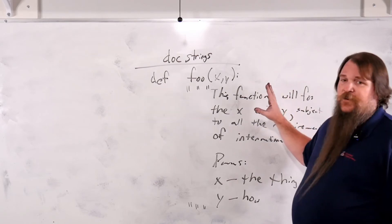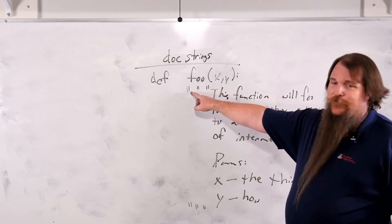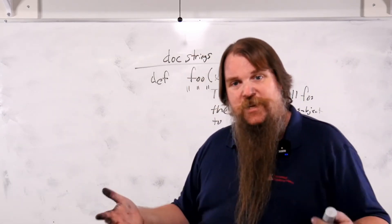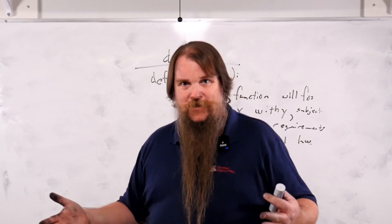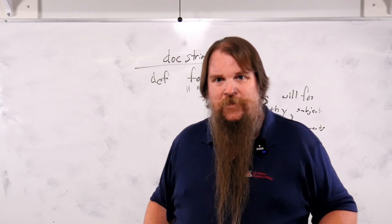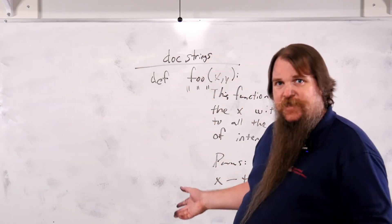When Python compiles your code, it will notice that the very first thing is a string but that nothing was done with the string. It was going to be lost. And Python says, ah, this is the doc string for foo. So when it compiles foo, it actually saves this away.